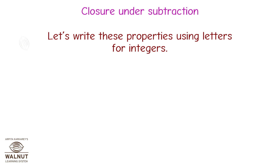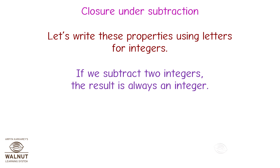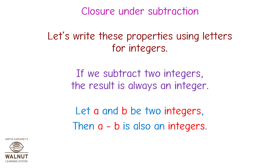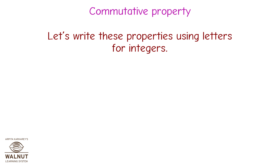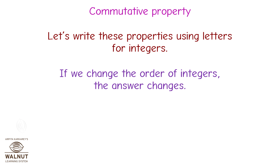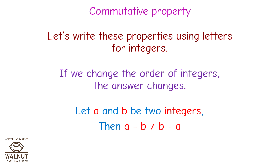Closure under subtraction. Let's write these properties using letters for integers. If we subtract two integers, the result is always an integer. Let a and b be two integers. Then a minus b is also an integer. If we change the order of integers, the answer changes. Let a and b be two integers. Then a minus b is not equal to b minus a.